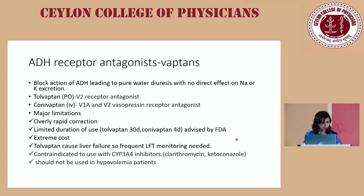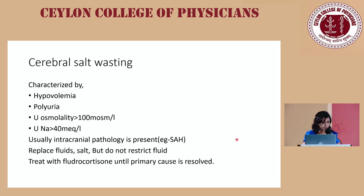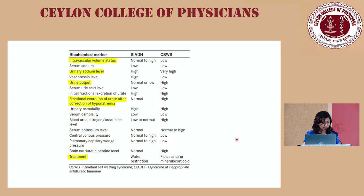Cerebral salt wasting is characterized by hypovolemia, polyuria, urine osmolality more than 100, and urine sodium more than 40, secondary to intracranial pathology. Important: do not restrict fluids — replace fluids, give saline, and consider fludrocortisol. Differentiating from SIADH: cerebral salt wasting patients are polyuric with low intravascular volume, very high urine sodium, and after correction of sodium, fractional excretion of urate remains high — unlike SIADH where it normalizes.